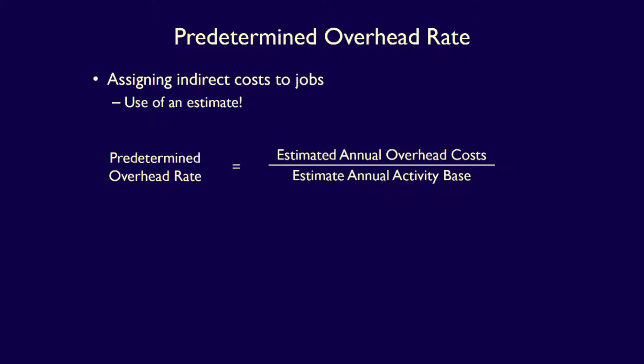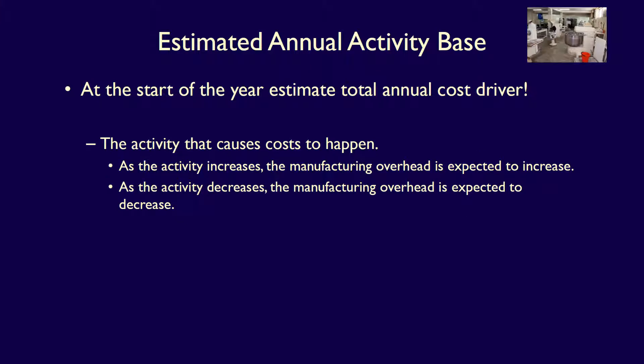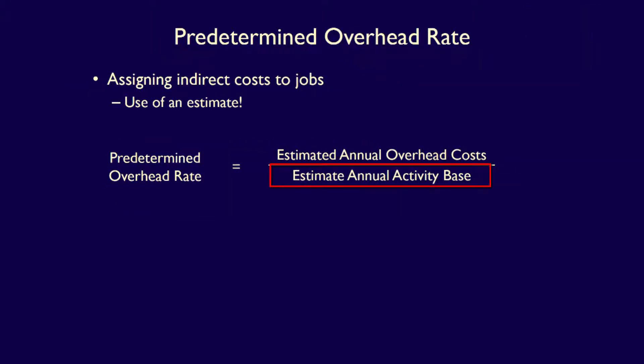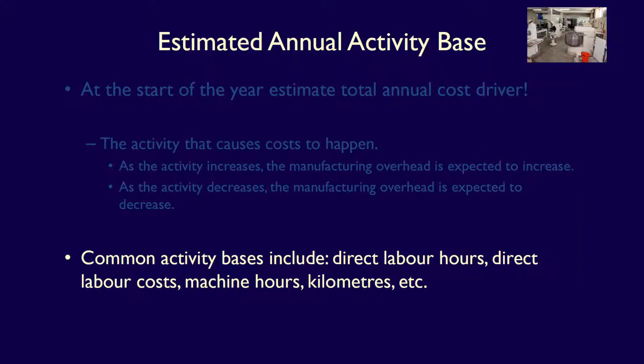The estimated annual activity base is actually the cost driver, something covered in a previous video. This is the activity which causes costs to not only happen, but also to change. If the activity increases, then the overhead costs increase, and if the activity decreases, the overhead costs decrease. Because this activity drives overhead costs, we can use it as the denominator in our calculation to allocate overhead to each job based on the actual activity the job consumes. Any base which, when it changes, causes overhead costs to change in the same direction, can be used as an activity base.